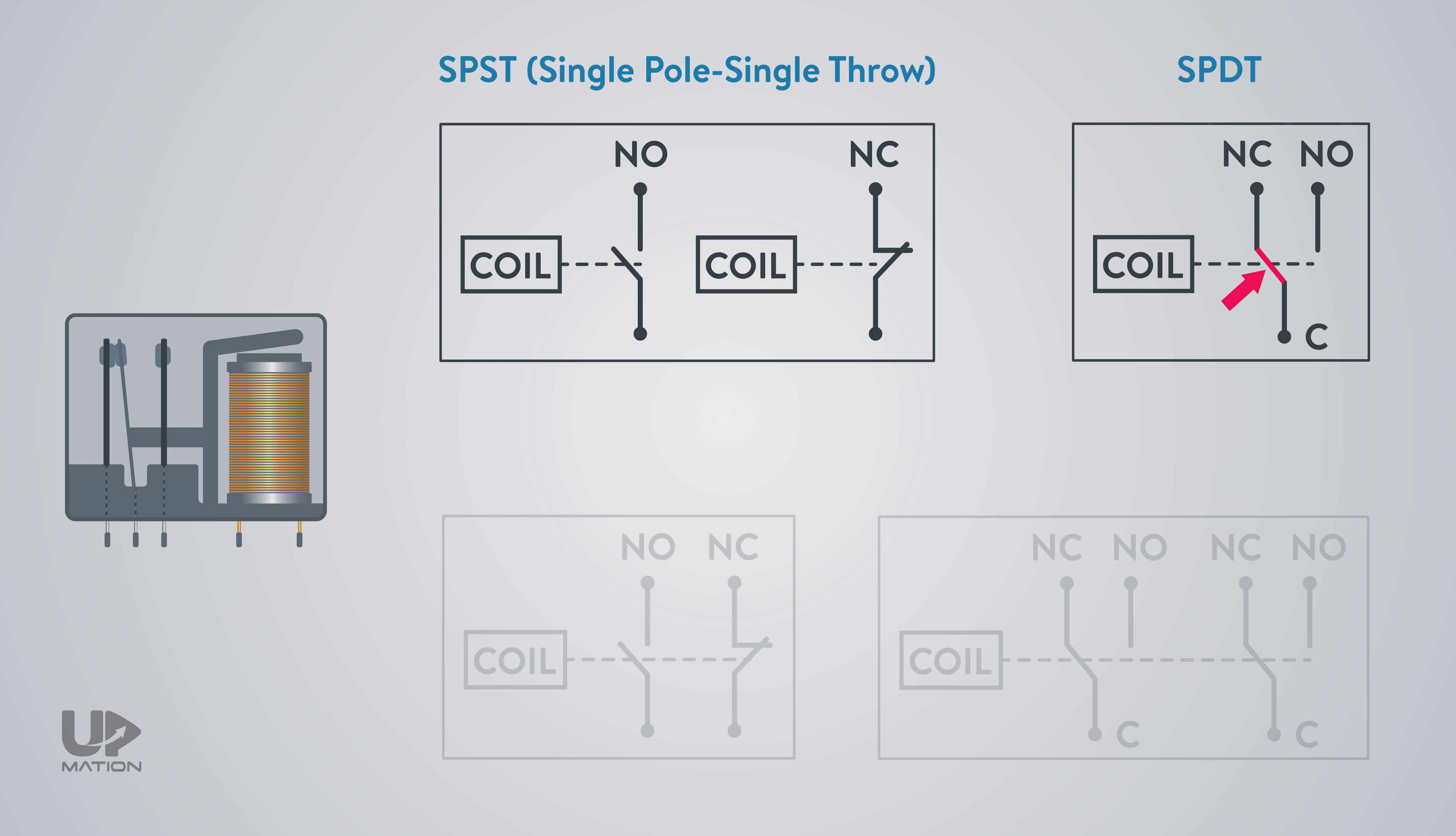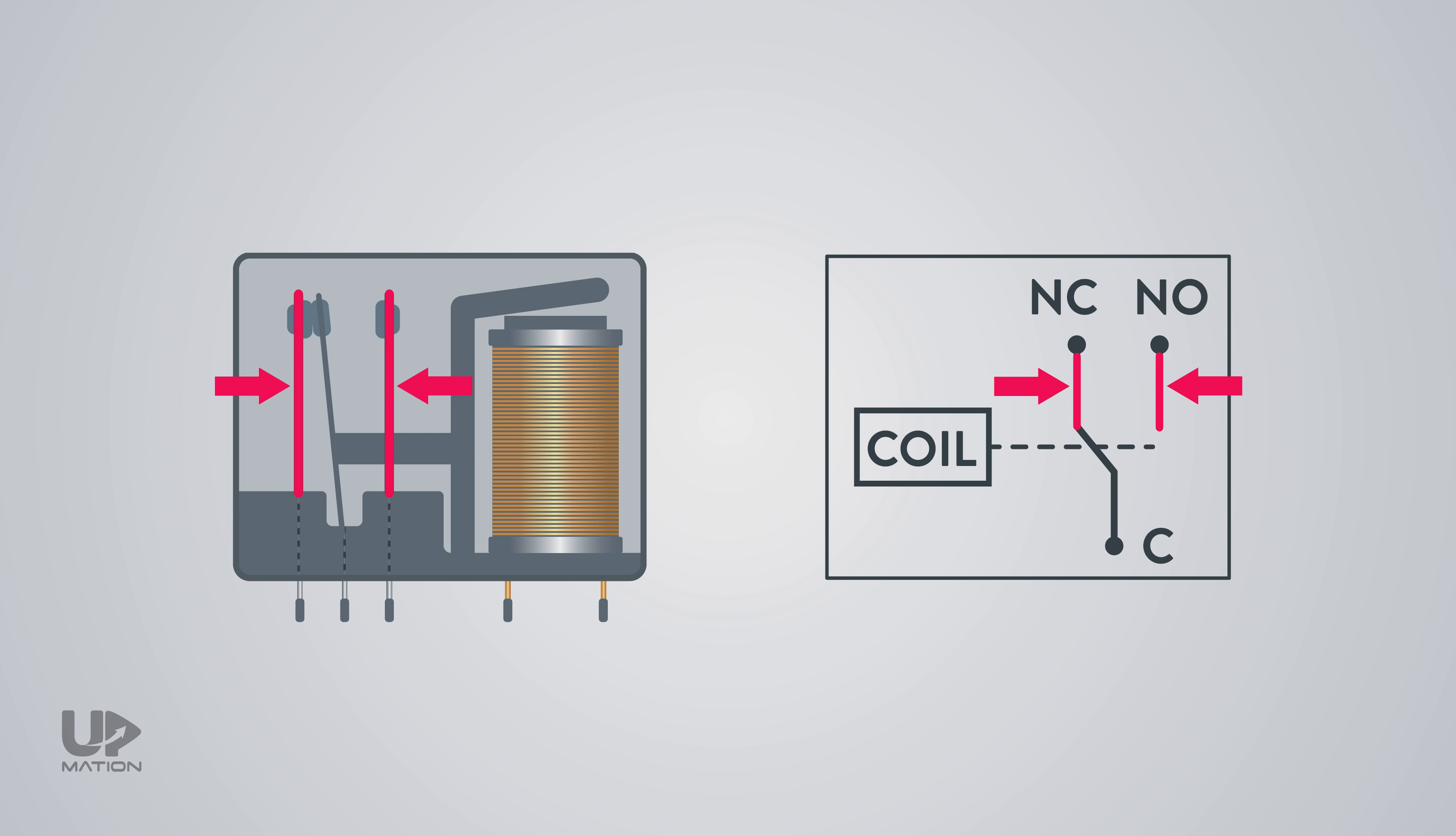SPDT or single pole, double throw. DPST and finally, DPDT relays. For example, this is a single pole, double throw or an SPDT contact type.